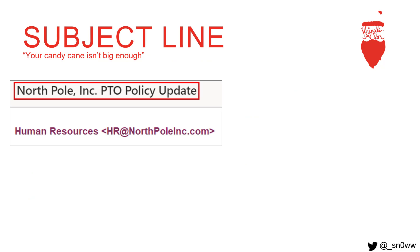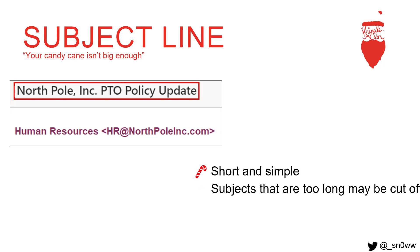One of the first things your target's going to see outside of the sender is the subject line. You want to make sure it's short and sweet and not too long that the email client cuts it off, because then they won't even be able to read it. And it has to have a sense of importance or else they're just going to skip over it. So here we have a very simple, short, and important subject line.